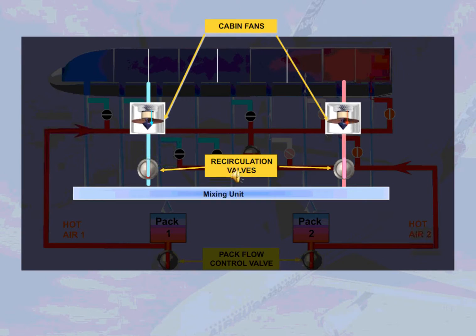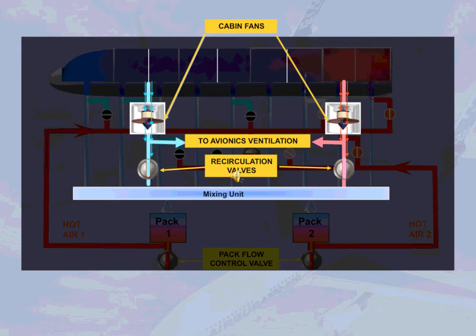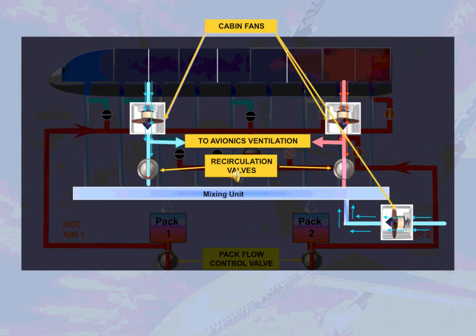Two cabin fans, which blow air to the mixing unit of the air conditioning system, are also used for the avionics system, as shown. Note: the cabin fans run continuously as long as the aircraft electrical system is supplied. The recirculation valves will partially close when both packs are off in order to ensure sufficient airflow to the avionics system. On a 340-600, a third cabin fan blows air to the mixing unit.